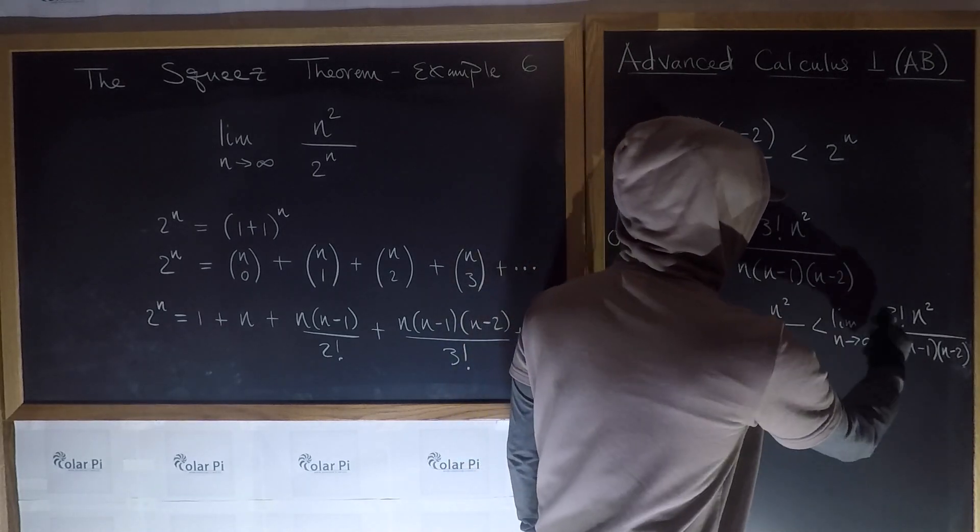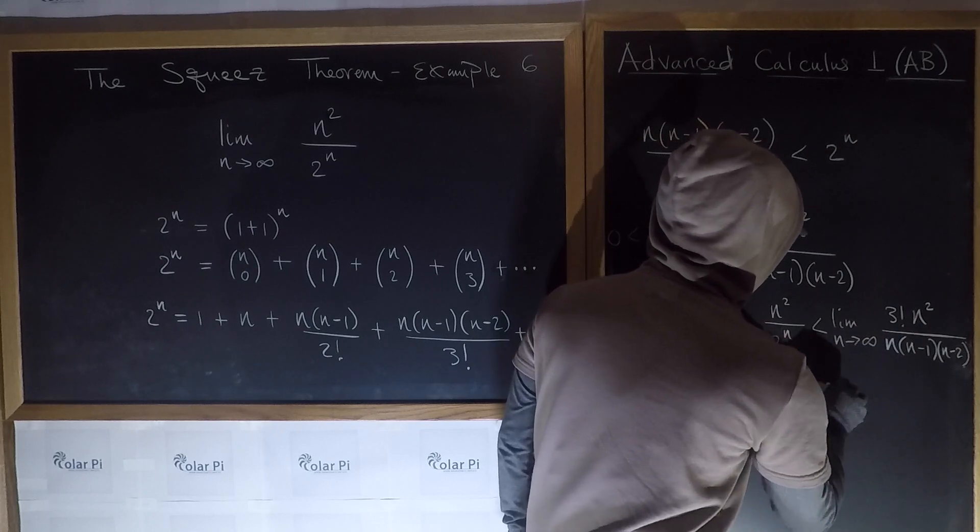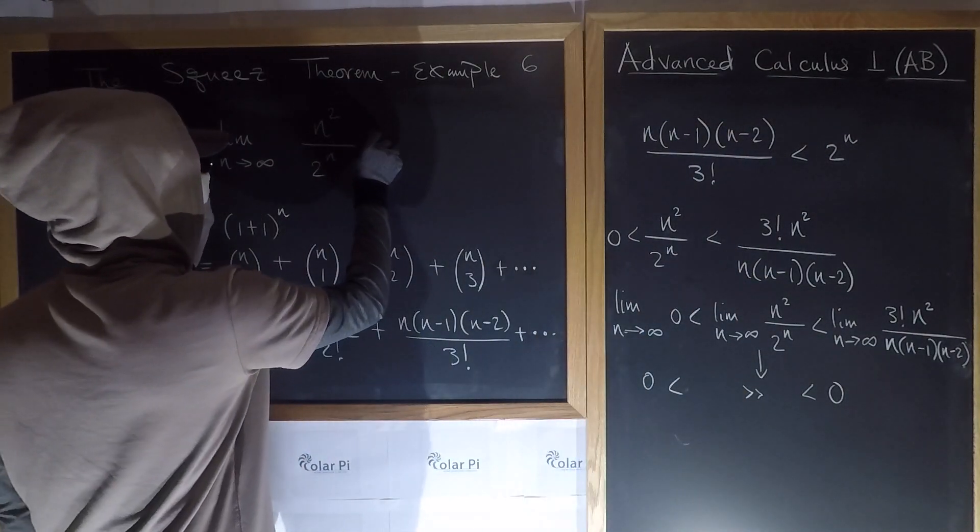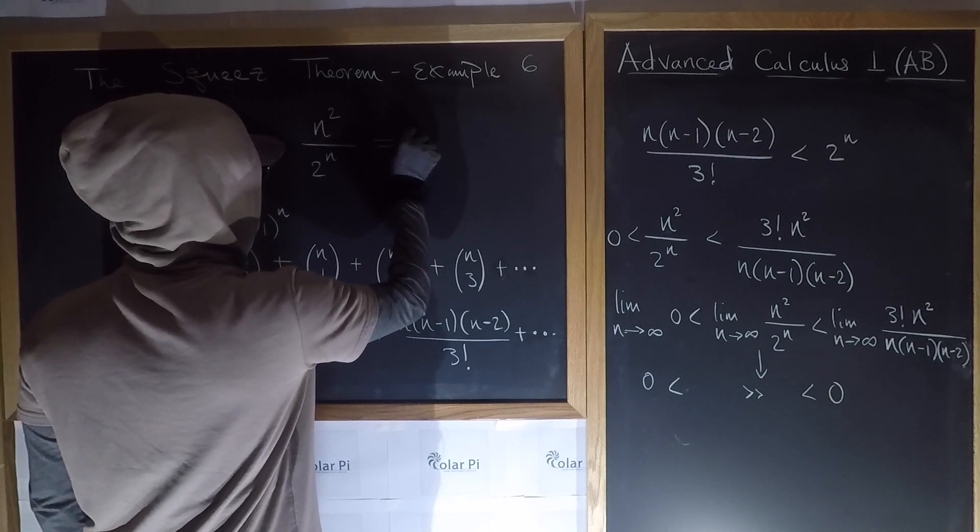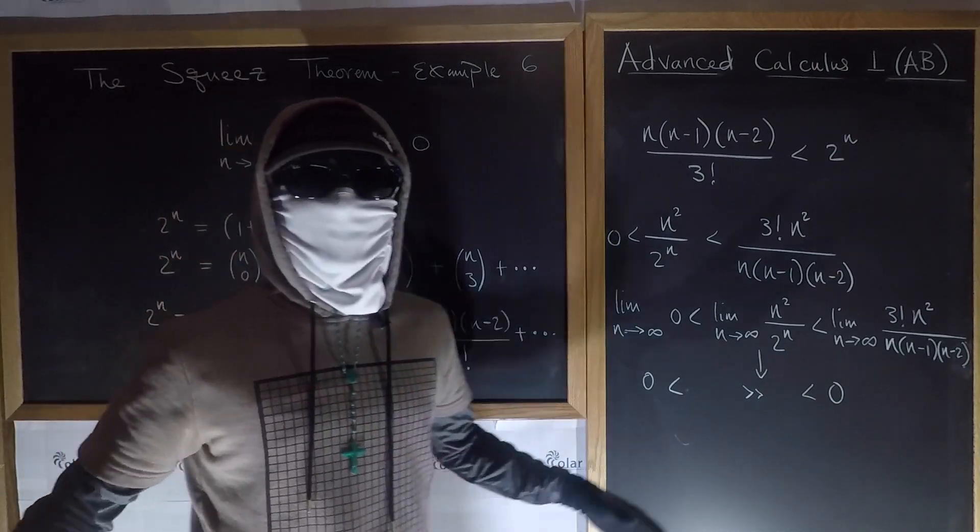so the denominator will dominate the numerator. And therefore, as n goes to infinity, this quotient is going to go to 0. And therefore, we conclude that this here is equal to 0. Yeah? Okay, cool. All right.